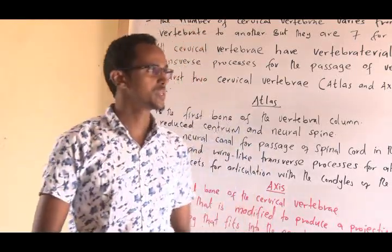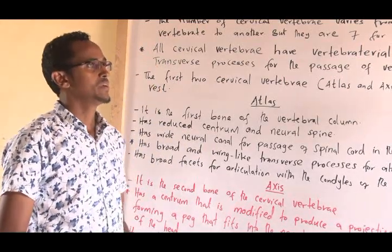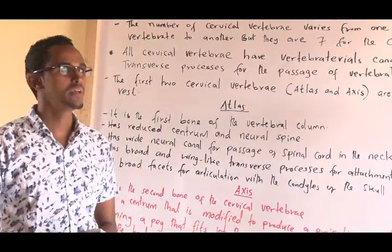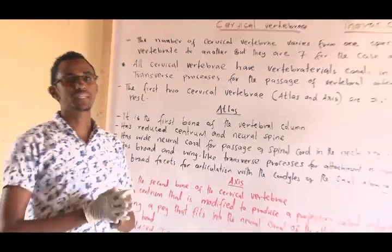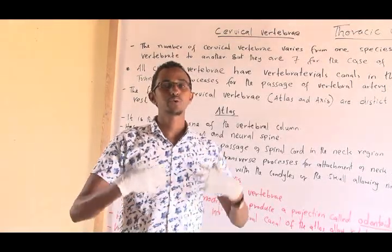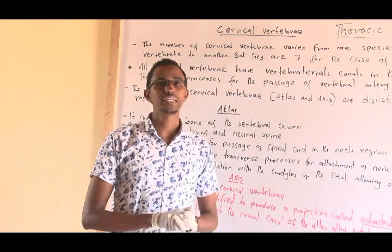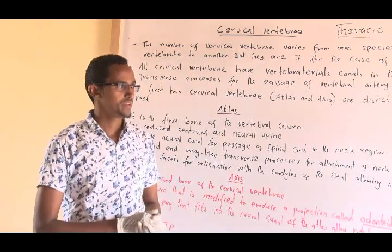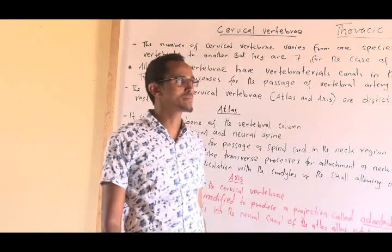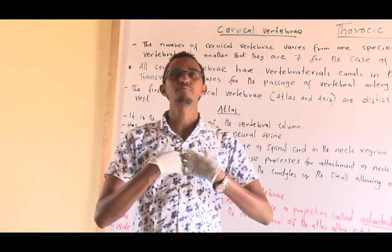In our previous lesson we discussed the axial skeleton. We discussed the skull, the ribcage and sternum, where we said the function of the ribs and the sternum is the production of red blood cells, assisting the process of inhalation and exhalation, and providing protection to the inner organs like the lungs and the heart.